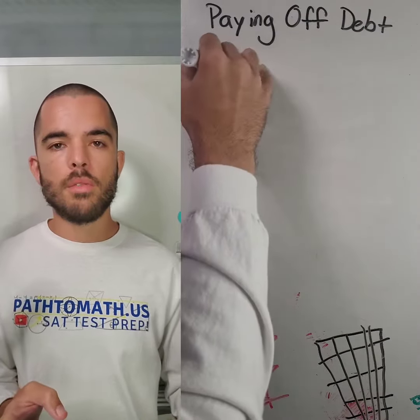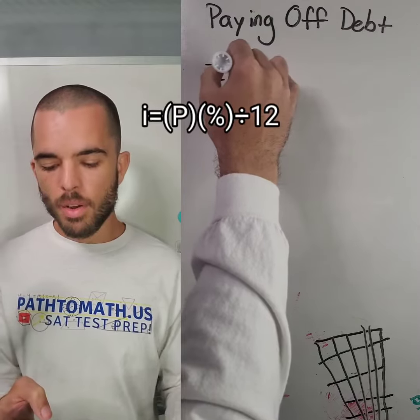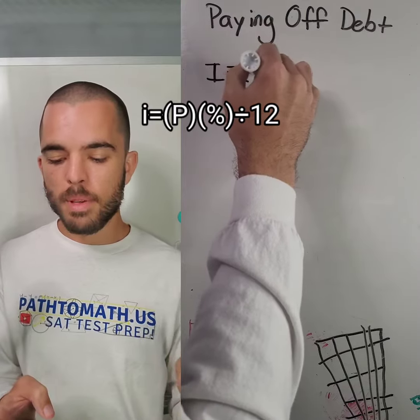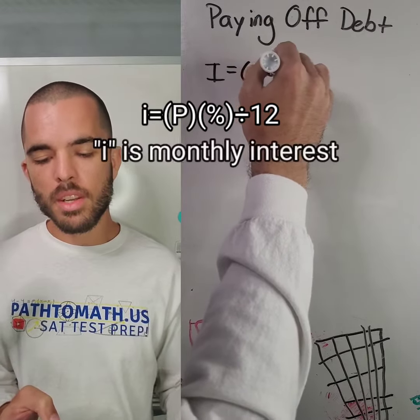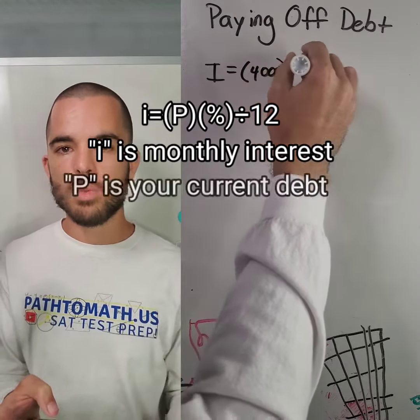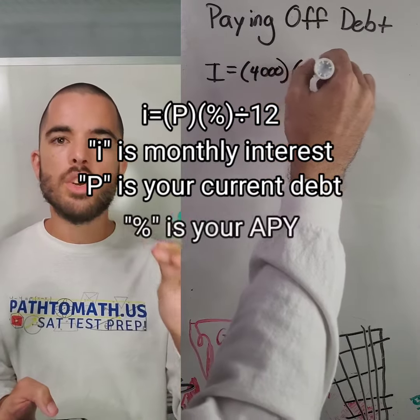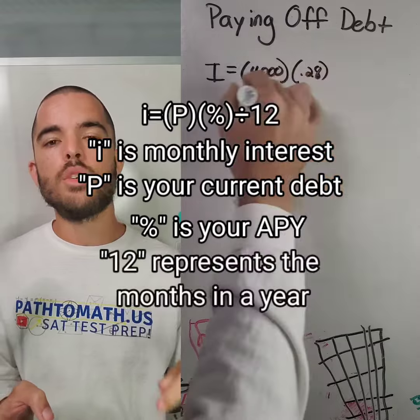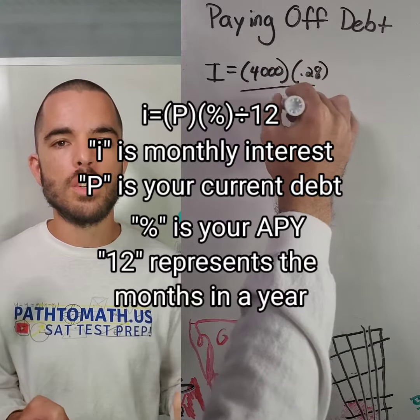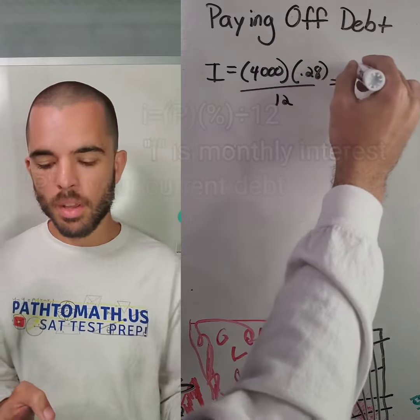Let's start off with the formula that we covered in a previous video: I equals P times percentage divided by 12. The percentage is your APY — that's your monthly interest that you're going to be accruing.